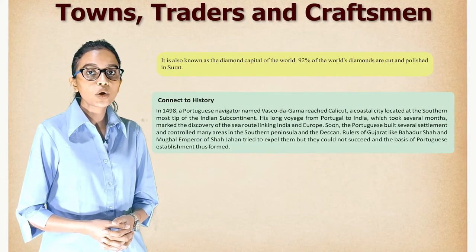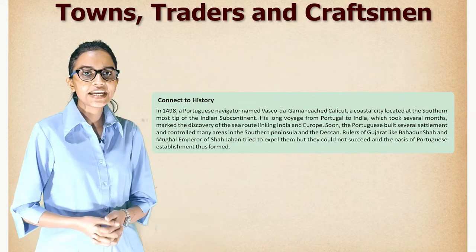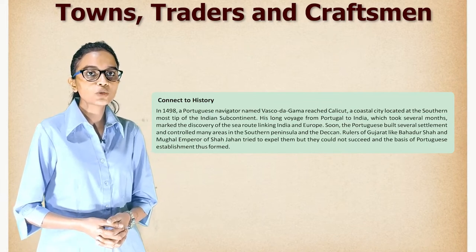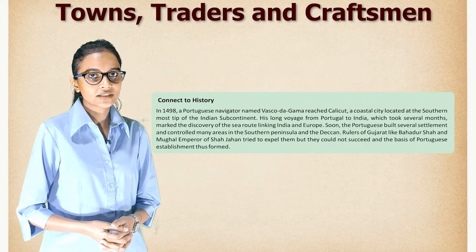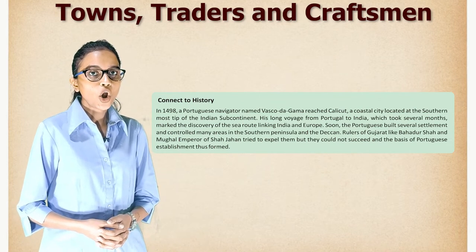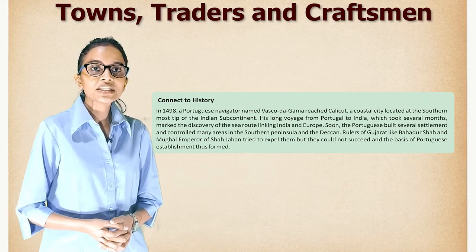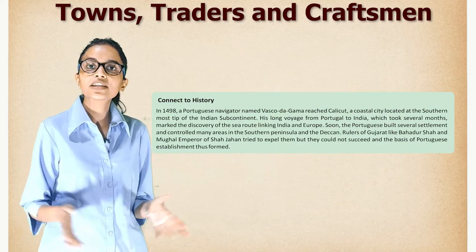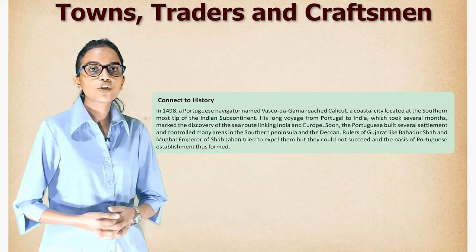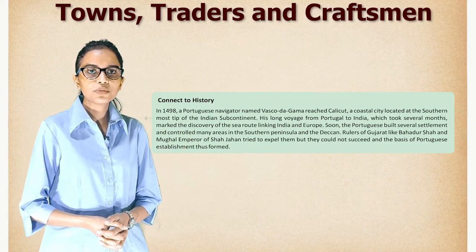The British took control of Surat again in 1759. It is also known as the diamond capital of the world — 92 percent of the world's diamonds are cut and polished in Surat. In 1498, the Portuguese navigator Vasco da Gama reached Calicut, a coastal city at the southernmost strip of the Indian subcontinent. His long voyage from Portugal to India marked the discovery of the sea route linking India and Europe. The Portuguese soon built several settlements and controlled many areas in the southern peninsula. Rulers of Gujarat like Bahadur Shah and Mughal Emperor Shah Jahan tried to expel them but could not succeed.